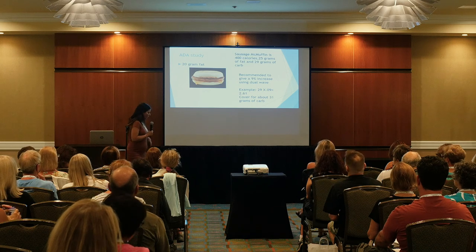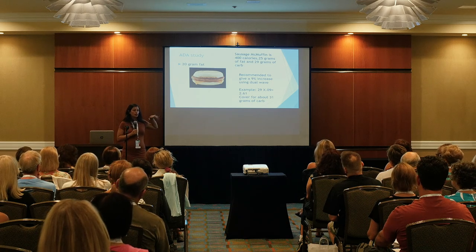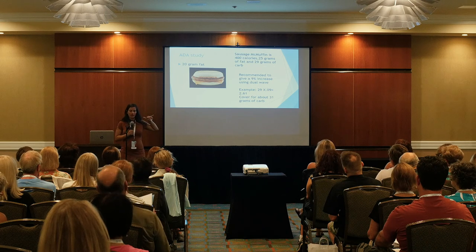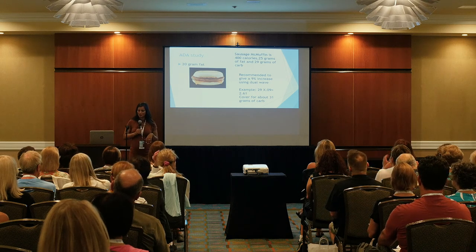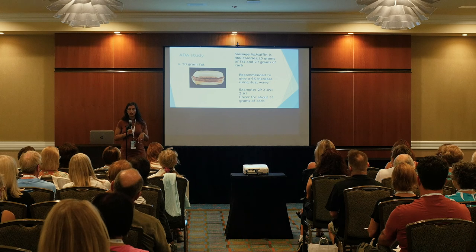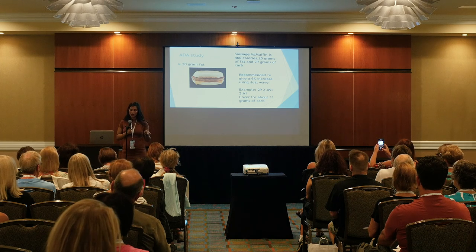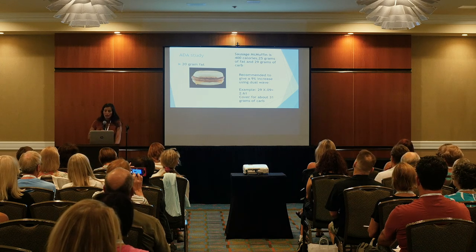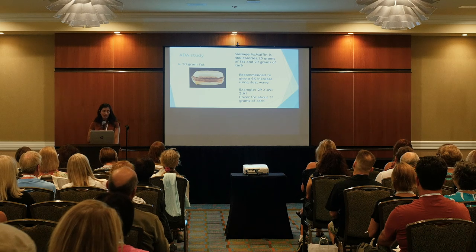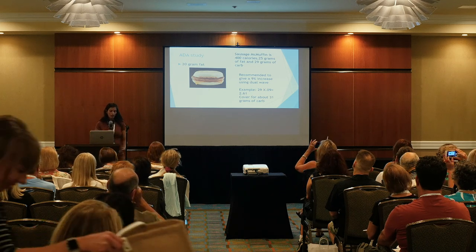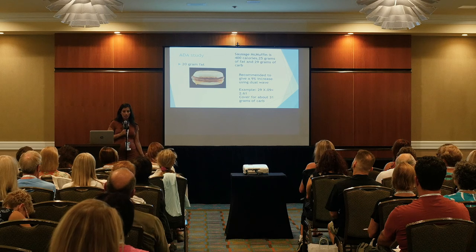I went to McDonald's online to show what those fat levels look like. For 20 grams of fat — a sausage McMuffin — they found a recommended 9% bolus increase. So if I have 29 grams of carb in that sandwich, multiply by 0.09, that's about 2.61 grams — effectively covering 29 grams as 31 grams of carb. Not a huge difference, but if your ratio is tight, this might be an extra unit.